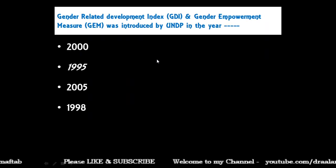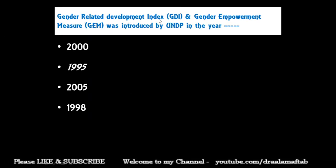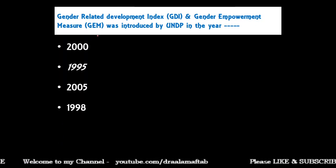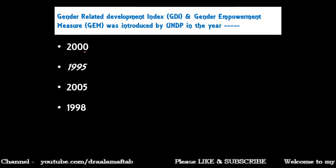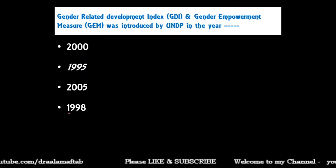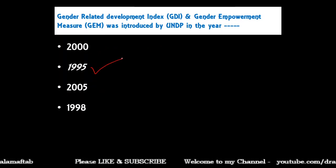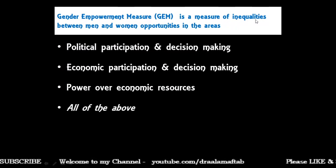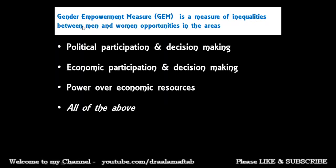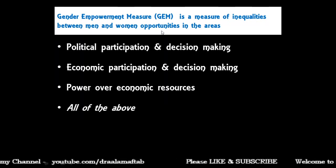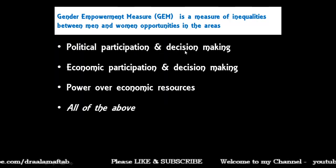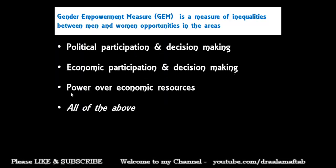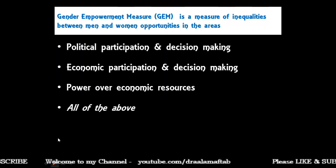Gender Related Development Index and Gender Empowerment Measure were introduced by UNDP in which year: 2000, 1995, 2005, or 1998? They were introduced in 1995. Gender Empowerment Measure is a measure of inequalities between men and women in: political participation and decision making; economic participation and decision making; power over economic resources; or all of the above?